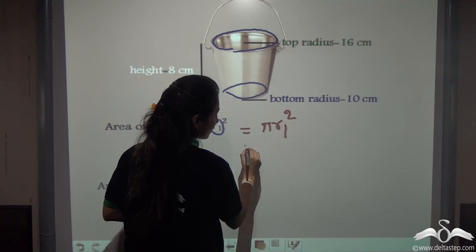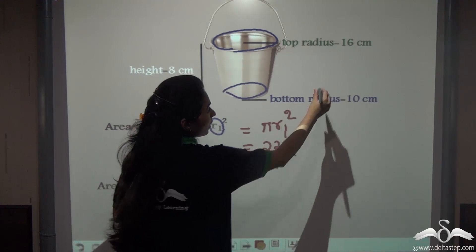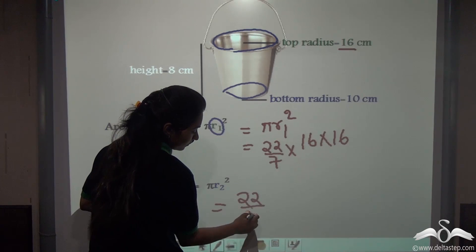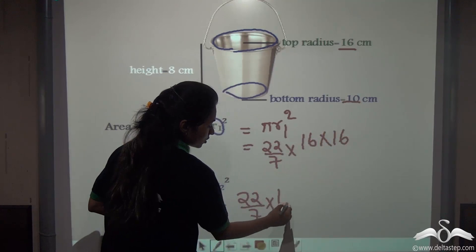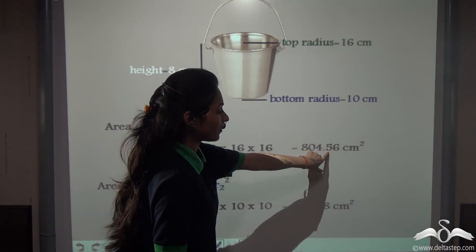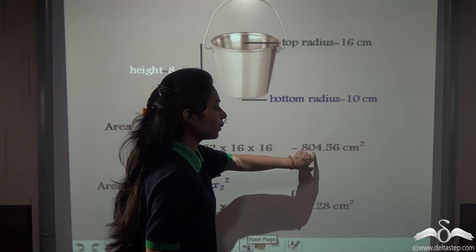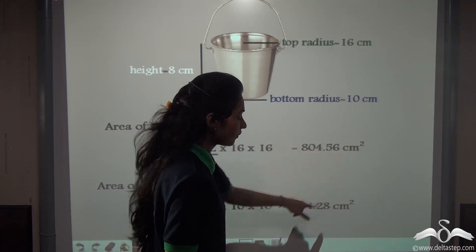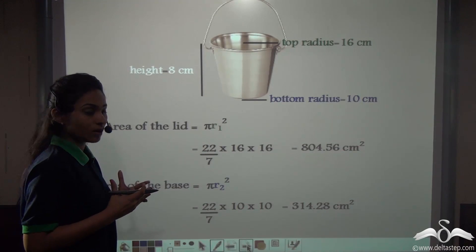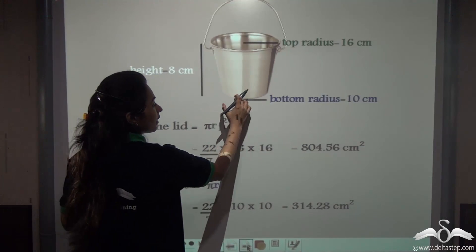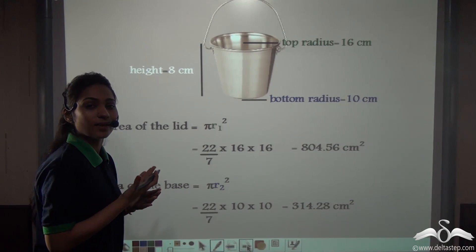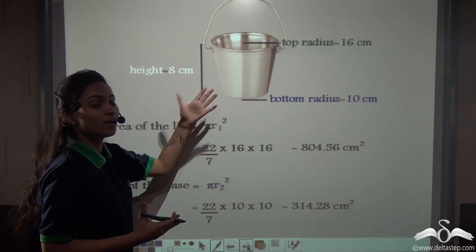Solving: π × R1² = (22/7) × 16 × 16 ≈ 804.56 cm², and π × R2² = (22/7) × 10 × 10 = 314.28 cm². So we have found the curved surface area, the area of the lid, and the area of the base — these together give us the total surface area of this frustum.